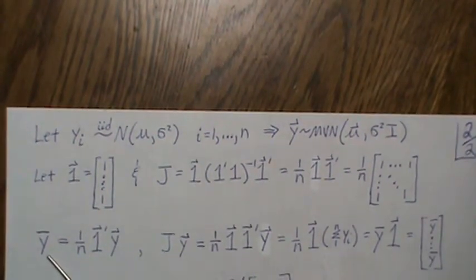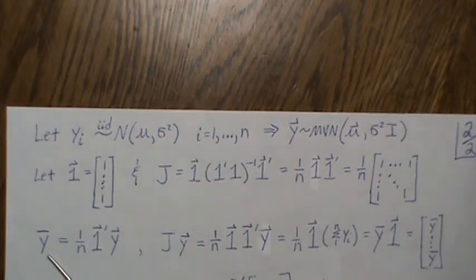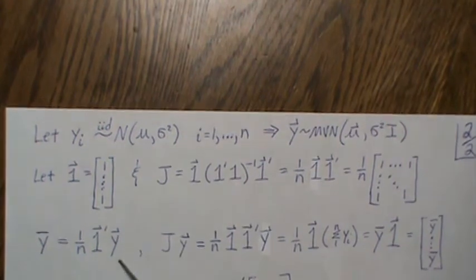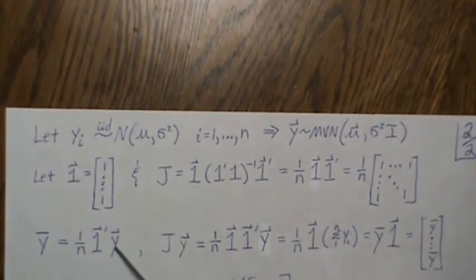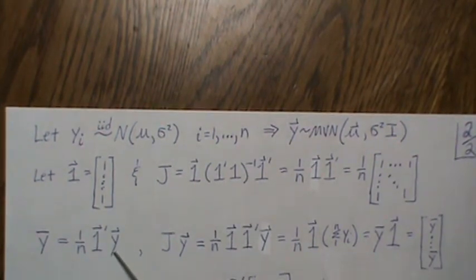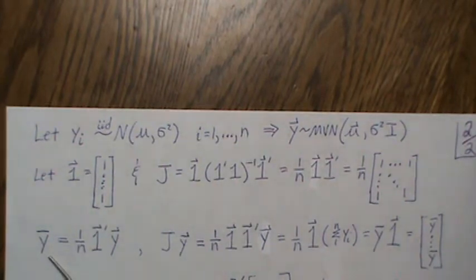This is going to be the backbone of our derivations here. So the mean, remember that's the sum of the Ys divided by n, can be written like this in matrix form. So this is Y1, Y2 all the way to Yn, and this is a vector of ones. When you do this product, you get the sum of the Ys divided by n. So that is the sample mean.